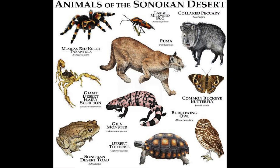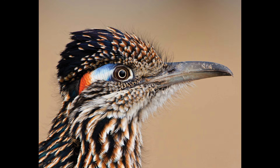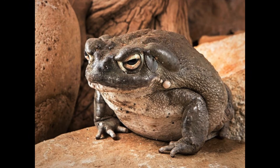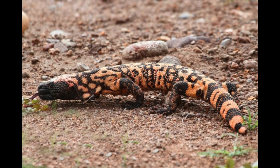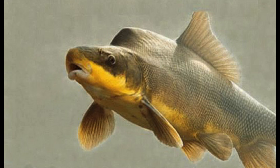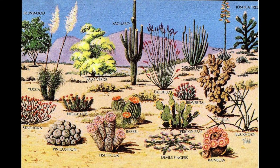It is also home to about 130 species of mammals, more than 500 kinds of birds, 20 amphibians, 100 or so reptiles, and 30 native freshwater fish. Perhaps as many as 2,500 native species of plants occur within the Sonoran Desert proper.